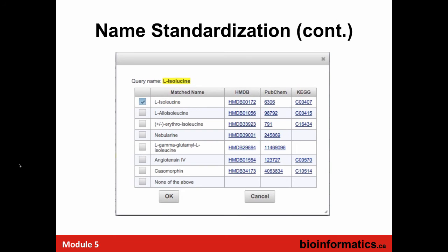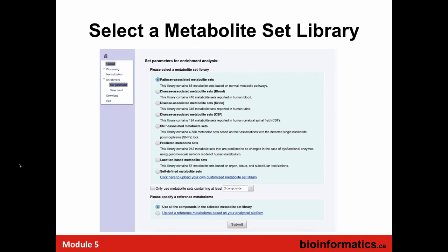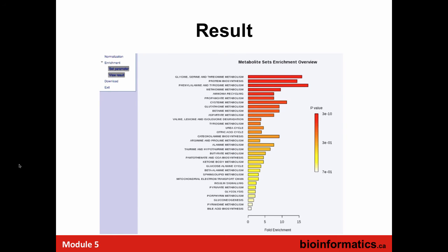Once you've fixed any problems, you can try to choose your metabolite set library. There's a bunch of libraries: pathway-associated ones, disease-associated ones, some specific to blood, urine, or CSF, some associated with SNPs, others related to dysfunctional enzymes. You collect the one you want — we chose the top one. This is the result.